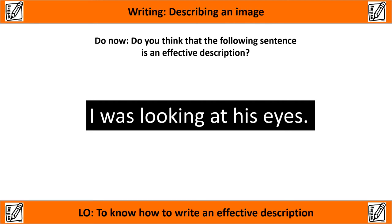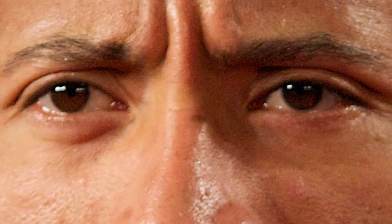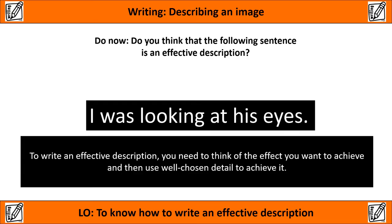For your 'do now' task, have a look at the following sentence and answer the question: do you think it's an effective description? 'I was looking at his eyes.' Here's the problem with a sentence like this. Perhaps when you read that sentence you were picturing different sets of eyes entirely. Was 'I was looking at his eyes' an effective description? I would suggest no — to write an effective description you need to think of the effect you want to achieve and then choose well-chosen detail to achieve it. There was no detail within that sentence that led you as a reader to picture what I wanted you to see.